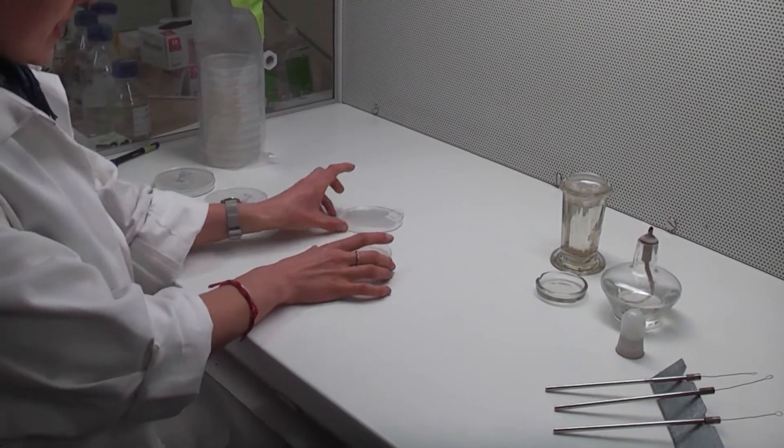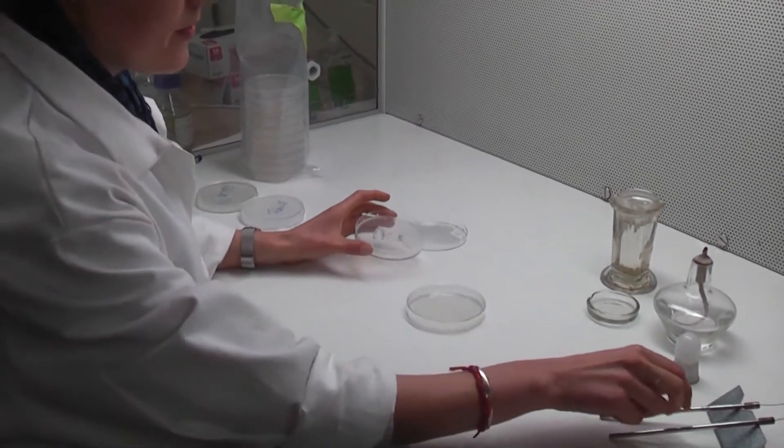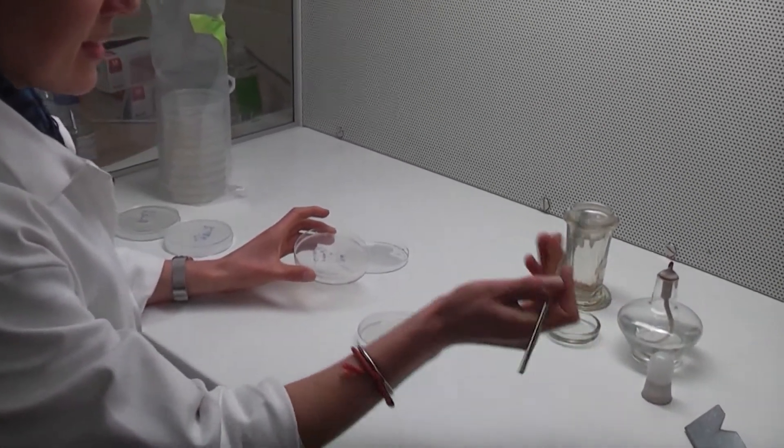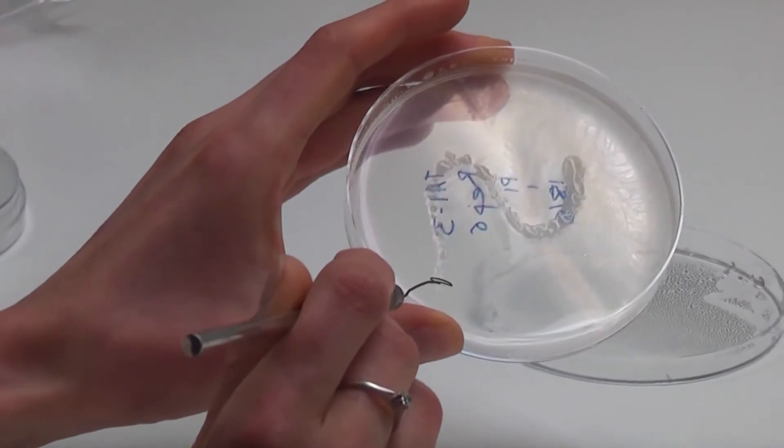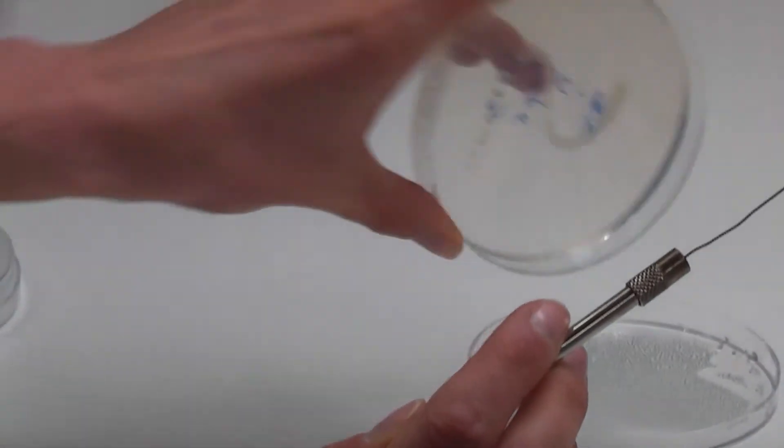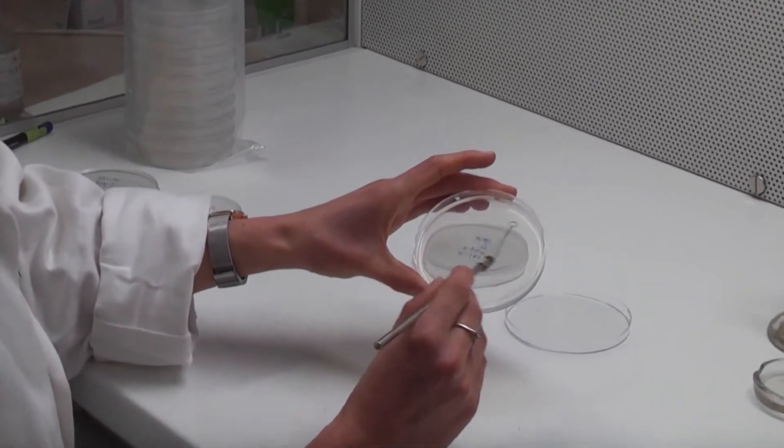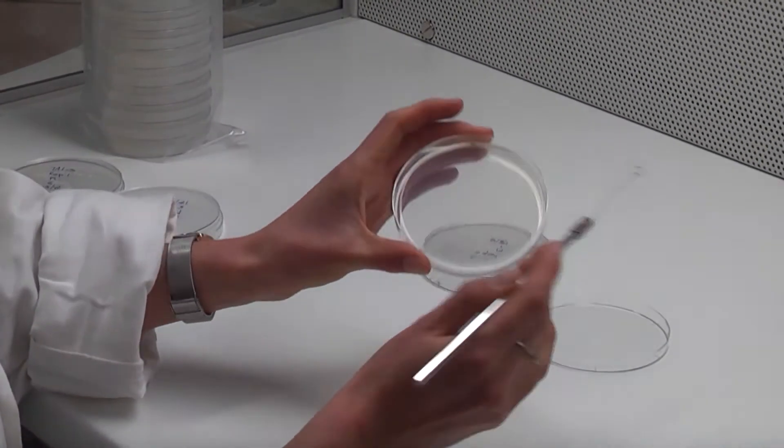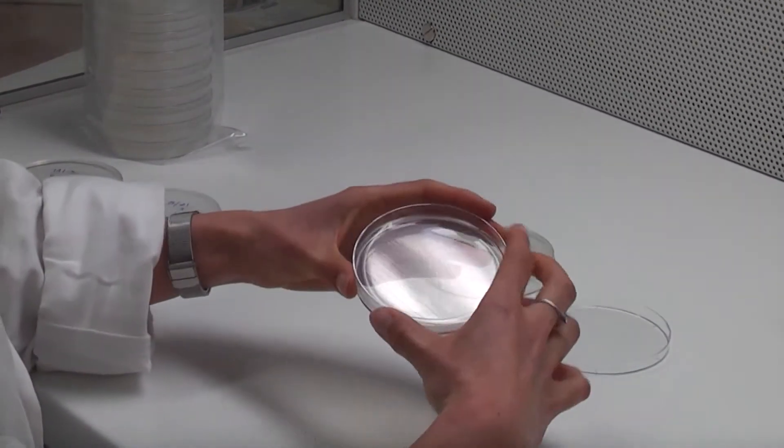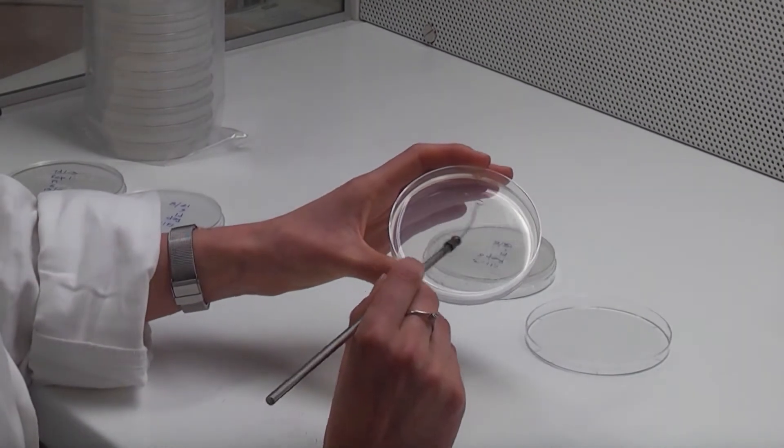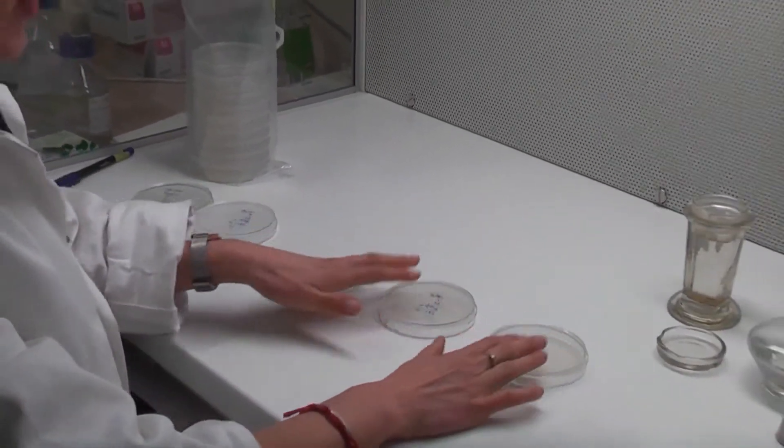So to clean this up, we get a fresh yeast mannitol agar plate and one of these sterile loops, and then we dip it into a clean part of the plate and just streak it. First like this, and then like this, and finally like this. And as easy as that.